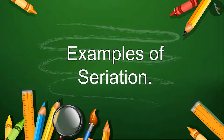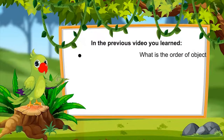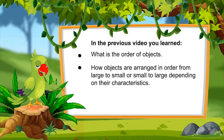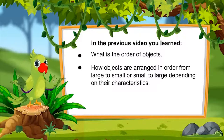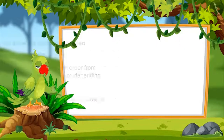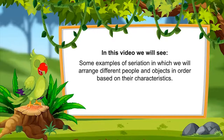What are the examples of seriation? So children, in the previous video you have learned what is the order of objects — based on the characteristics of the objects, how they are arranged in large to small or small to large order. This process of arranging things in order is called seriation. In this video we will see some examples of seriation, in which we will arrange different people and objects in order based on their characteristics.